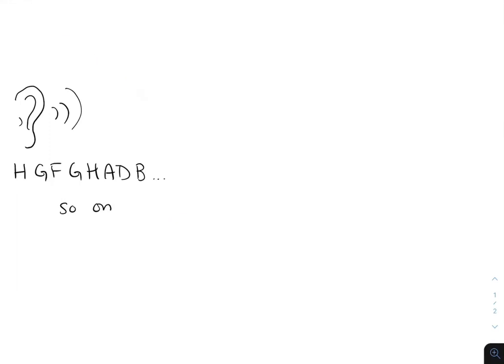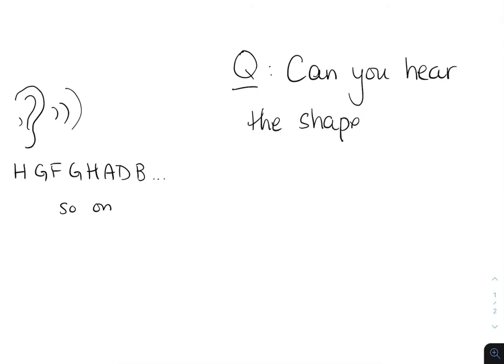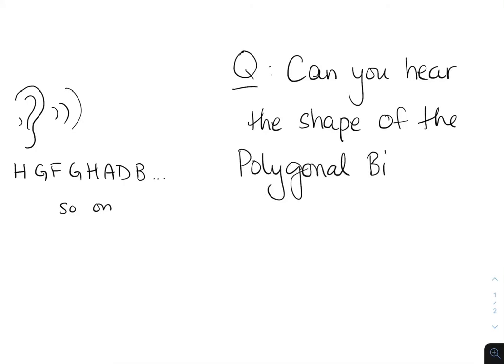Now suppose you couldn't see the billiard table anymore, and you can just hear all this different music. Can you hear the shape? Can you figure out what the shape of the billiard table is just by hearing all this different music?